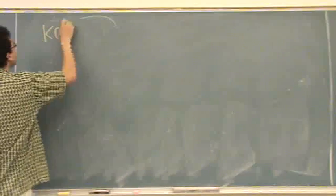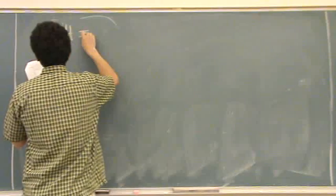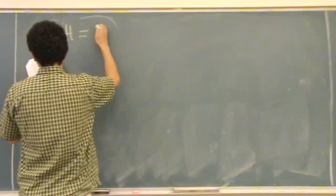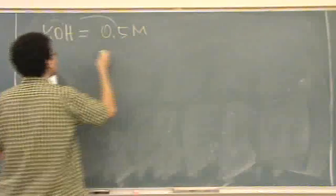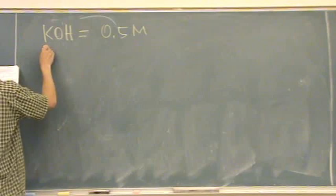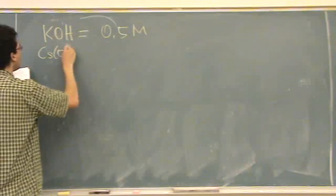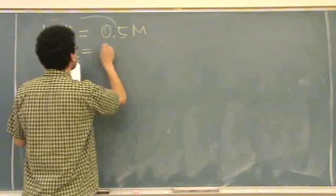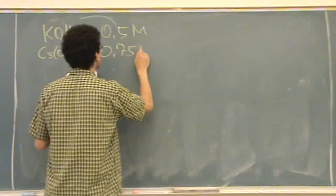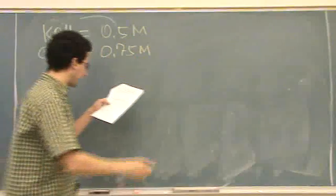Problem 207, number 18. You've got KOH, and its concentration is 0.5 molar. You've got Cs(OH)2, its concentration is 0.75 molar. We want to find POH.